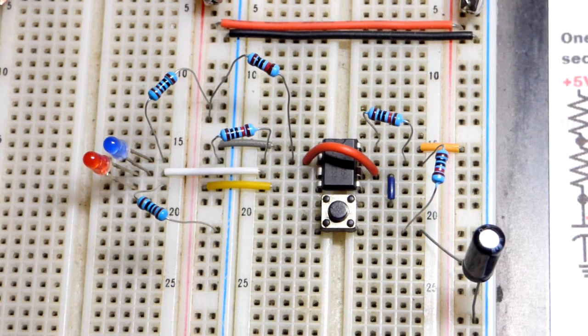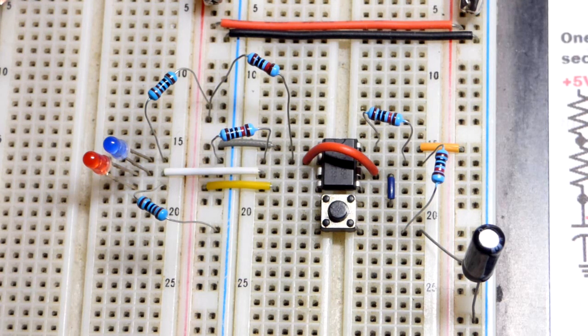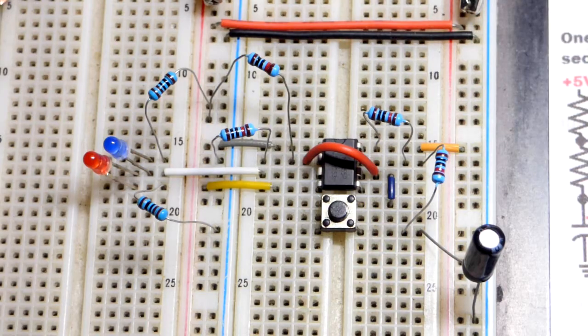To the 1K resistor, which if you're going to use 5 volts, I would actually use a 220 ohm. But since it's already on the schematic, I used the 1K.